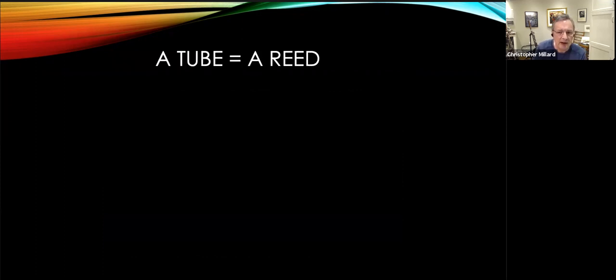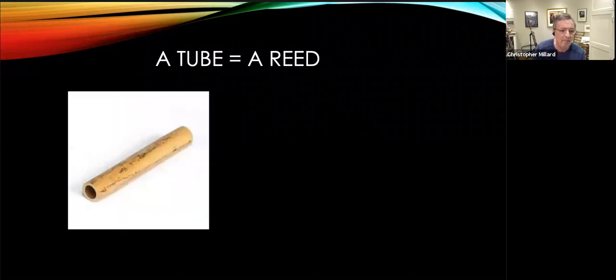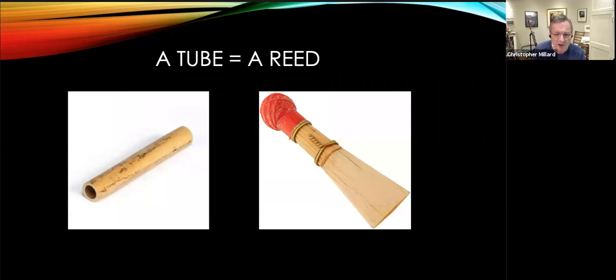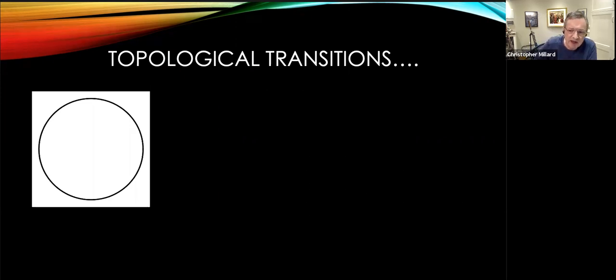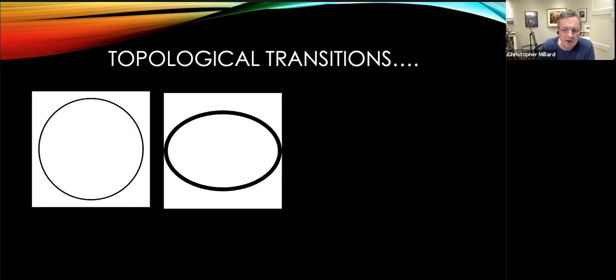You've probably seen this demonstration at some point in high school. If your coffee cup is made of plasticine, you can reshape it. Only one hole is necessary. Here's another equivalence, a tube and a reed. We make reeds from a single tube of cane. But these two things are not actually topologically consistent. If you split the tube, you can see that the two halves of a reed are the same. The property that changes is the radius.